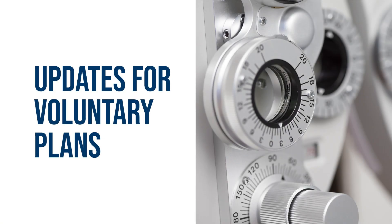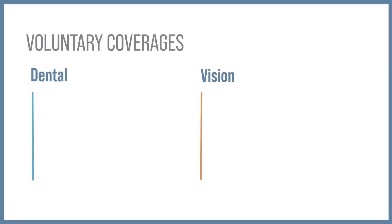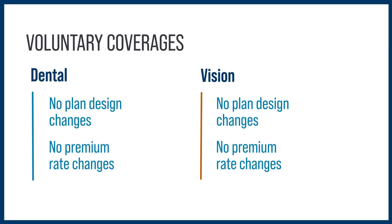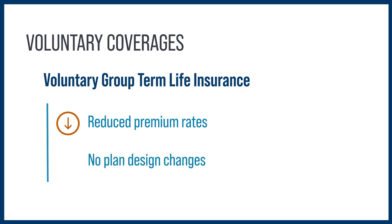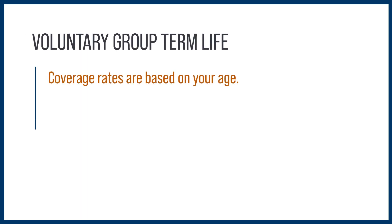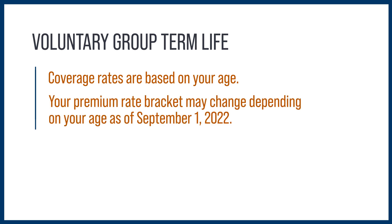There are no plan design or premium rate changes for any of our dental or vision plans this year. You'll find a reduced premium rate for voluntary group term life insurance, with no plan design changes. Voluntary group term life coverage rates are based on your age, so your premium rate bracket may change this year depending on your age as of September 1st.